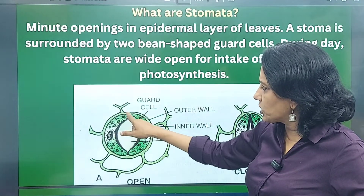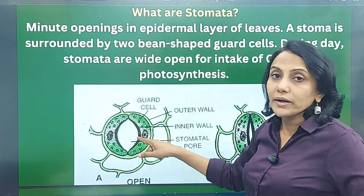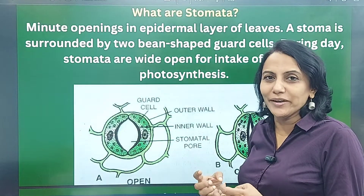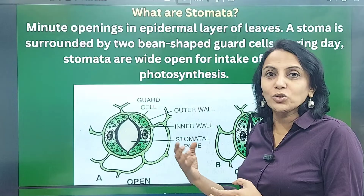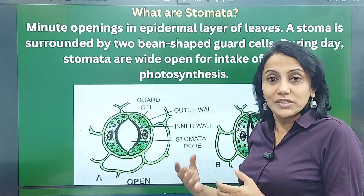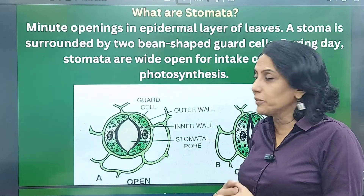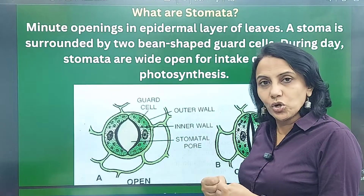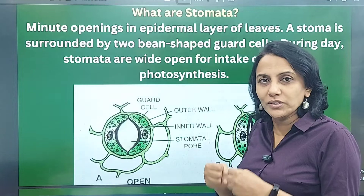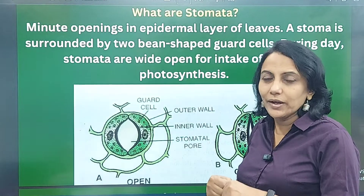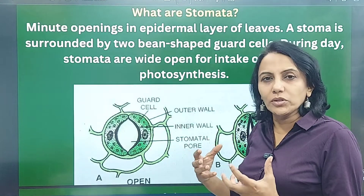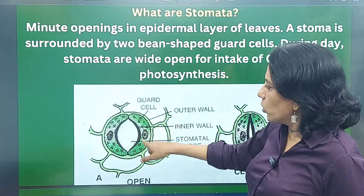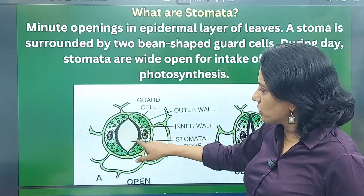There are two kidney-shaped cells surrounding each stoma called guard cells. Just as a security guard protects a building, guard cells protect the plant — they safeguard water when needed and allow water vapor to go out when there is excess. Guard cells are thicker on the inside and thinner on the outside.